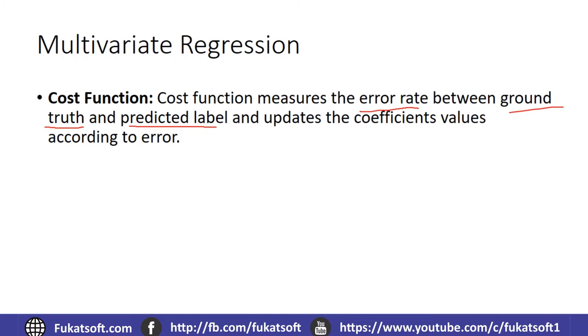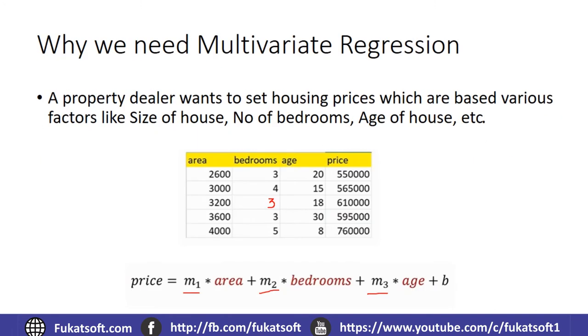What is the ground truth? We have data in the form of a table in which we have some features of houses and its predicted values. We know that this is the outcome. If there are 2600 areas, 3 bedrooms and age 20, then the cost of the house is 550,000. So the price we have is the ground truth.